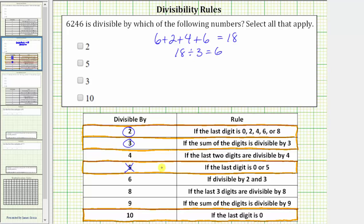And now we'll look at 10. A number is divisible by 10 if the last digit is 0. Again, the last digit is 6, and therefore 6,246 is not divisible by 10. If a number is not divisible by 5, it will never be divisible by 10.